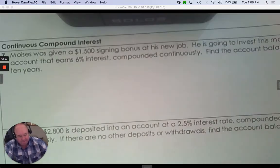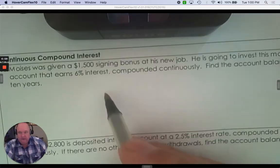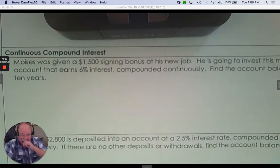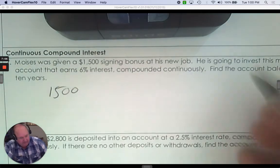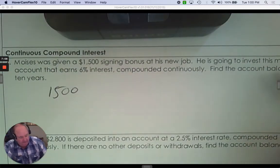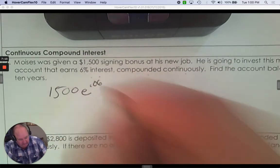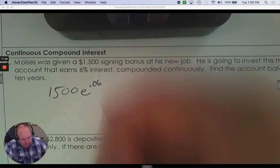Number seven. Moises was given $1,500 signing bonus at his new job. He's going to invest money that earned 6% compounded continuously. That's E. Find the balance after 10 years.